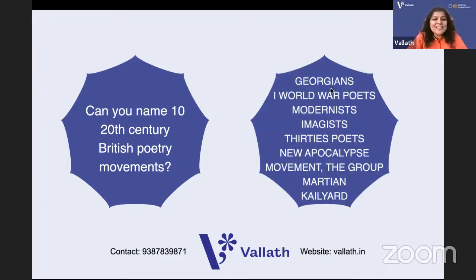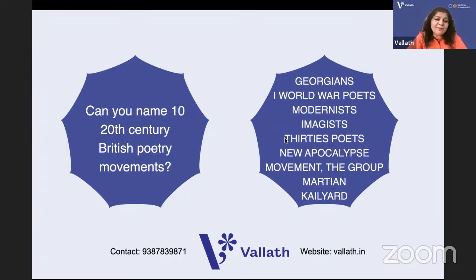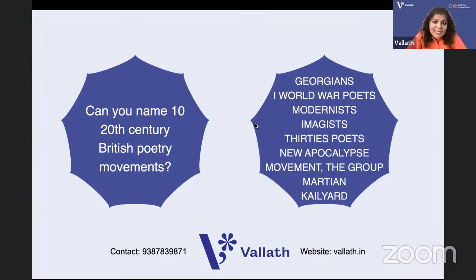Georgian poets wrote in a very simple style. Who are they? Rupert Brooke, Ralph Hodgson, John Masefield, John Drinkwater. Georgian poets' anthologies were edited by Edward Marsh. Then the First World War poets: Wilfred Owen, Siegfried Sassoon, and Rupert Brooke. Some World War poets attacked war like Wilfred Owen; some praised it like Rupert Brooke.